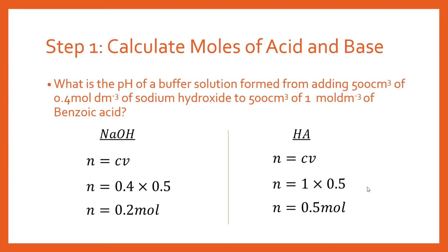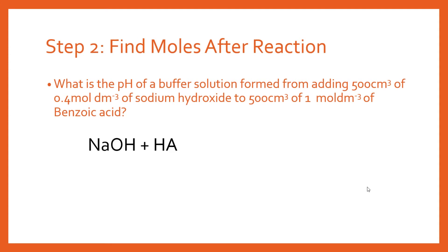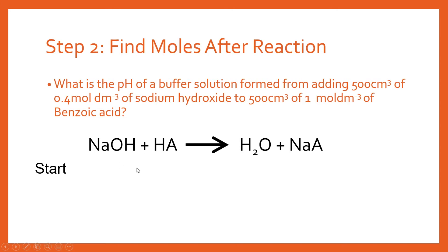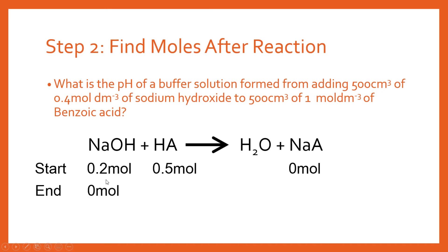Now we need to find the conjugate base by looking at the reaction. Sodium hydroxide reacts with our weak acid to form water and a salt, NaA. At the start of the reaction we have 0.2 moles of sodium hydroxide and 0.5 moles of weak acid. The sodium hydroxide is limiting and the acid is in excess, so all of the sodium hydroxide reacts. That leaves 0.3 moles of unreacted acid, and in a 1:1 ratio you get 0.2 moles of salt produced.